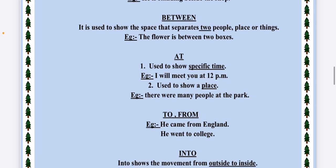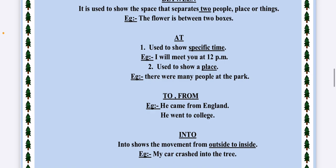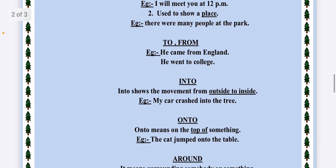Next preposition is AT. At is used to show a specific time. I will meet you at 12 PM. It is also used to show a place. There were many people at the park. Next is TO and FROM. To means that you are going to a certain place. He went to college. From means that you are coming from a certain place or getting something from a certain place. He came from England. I got that toy or that dress from that place.